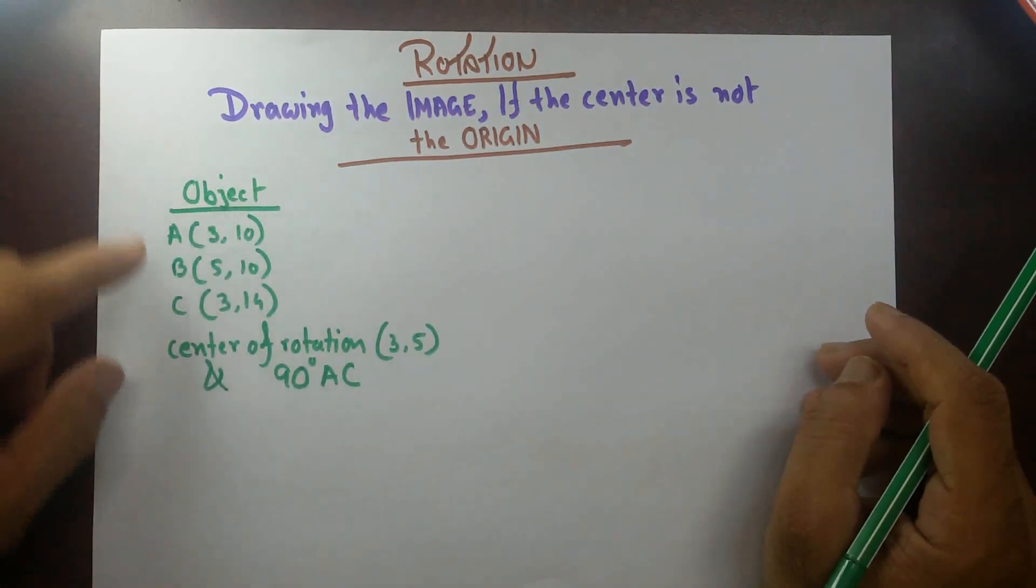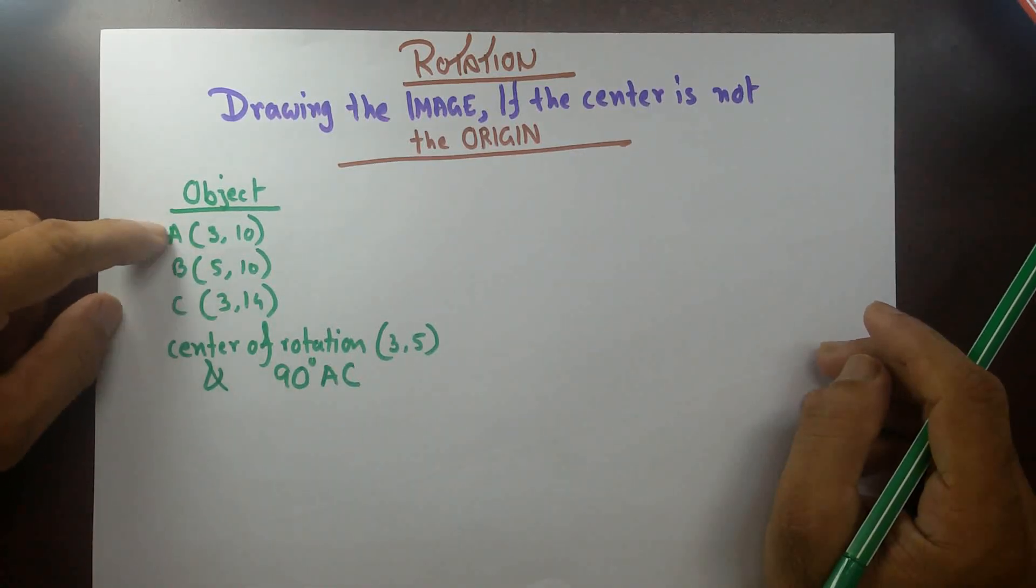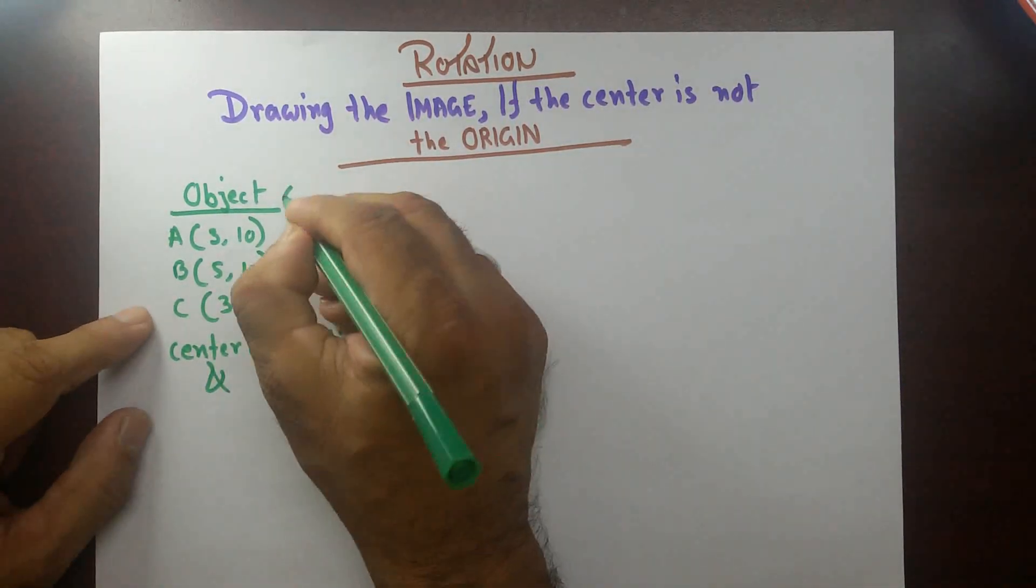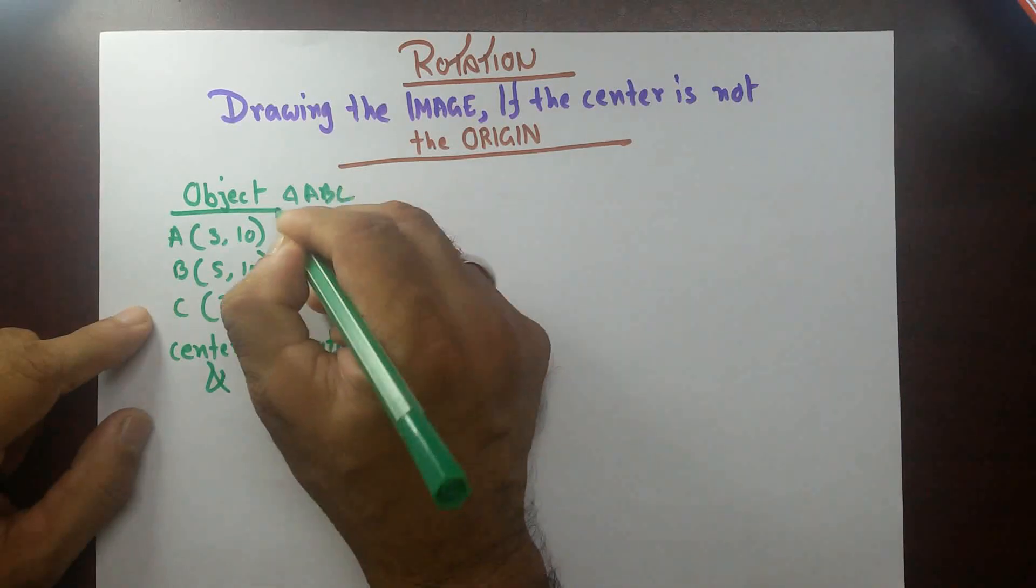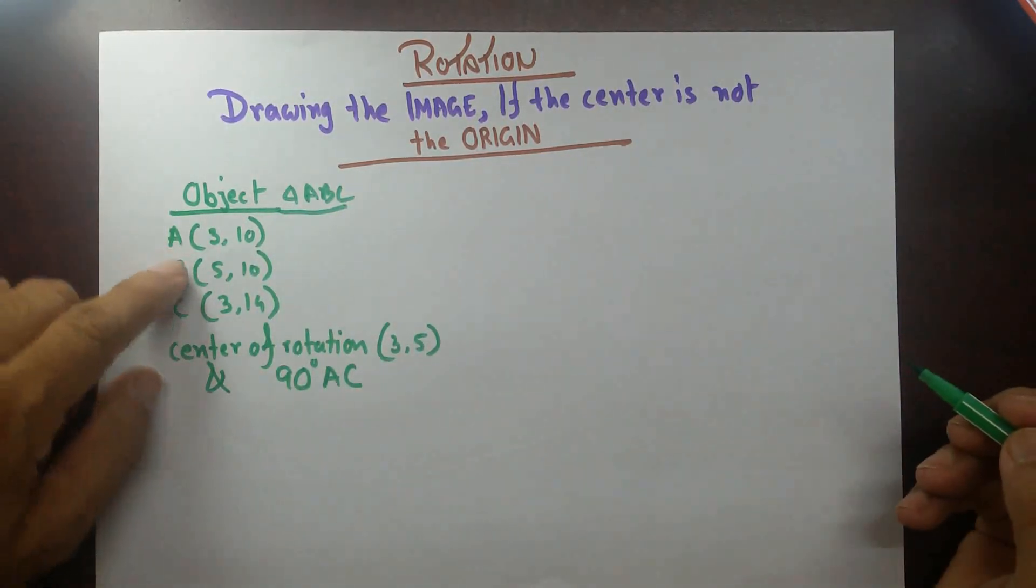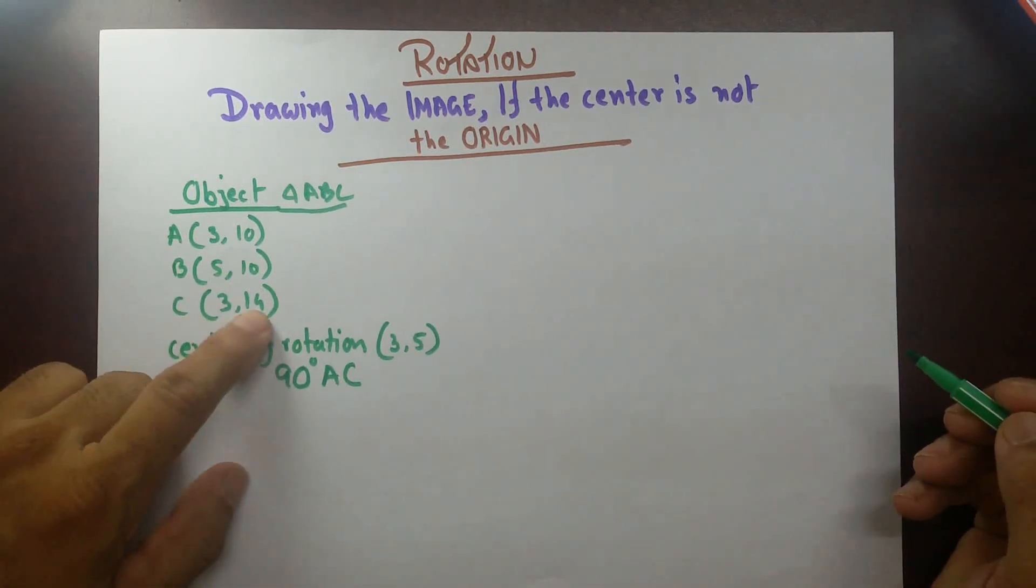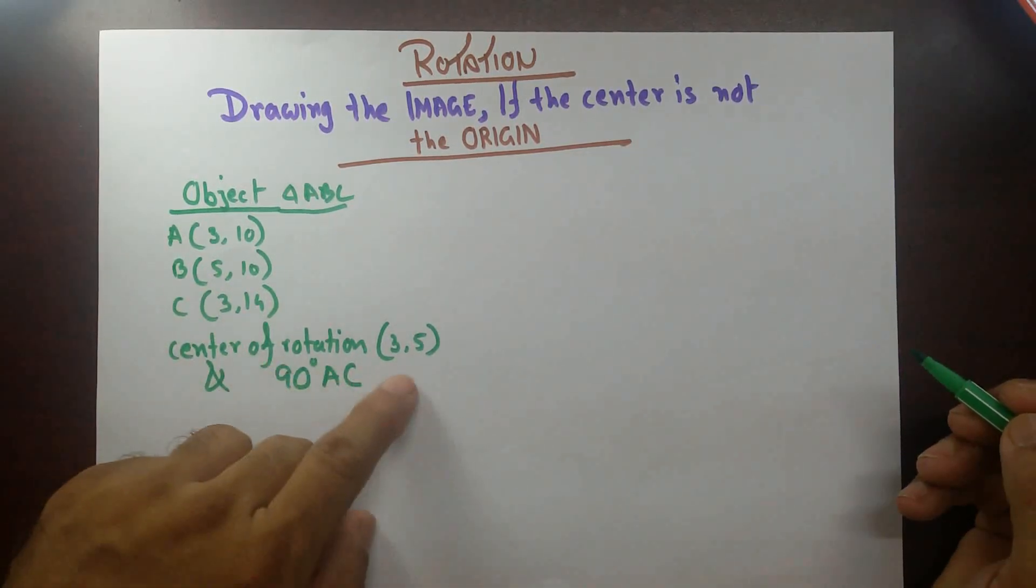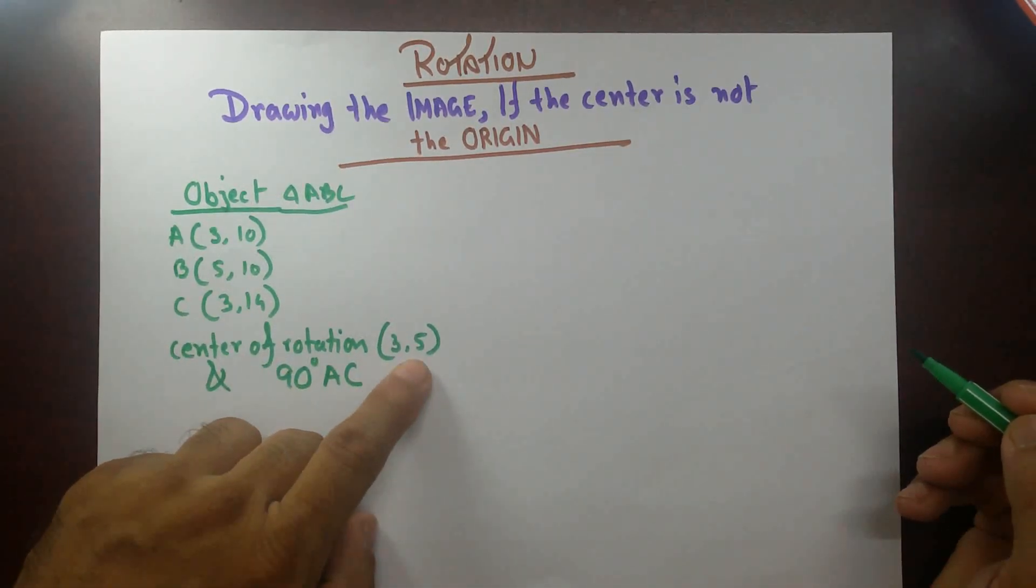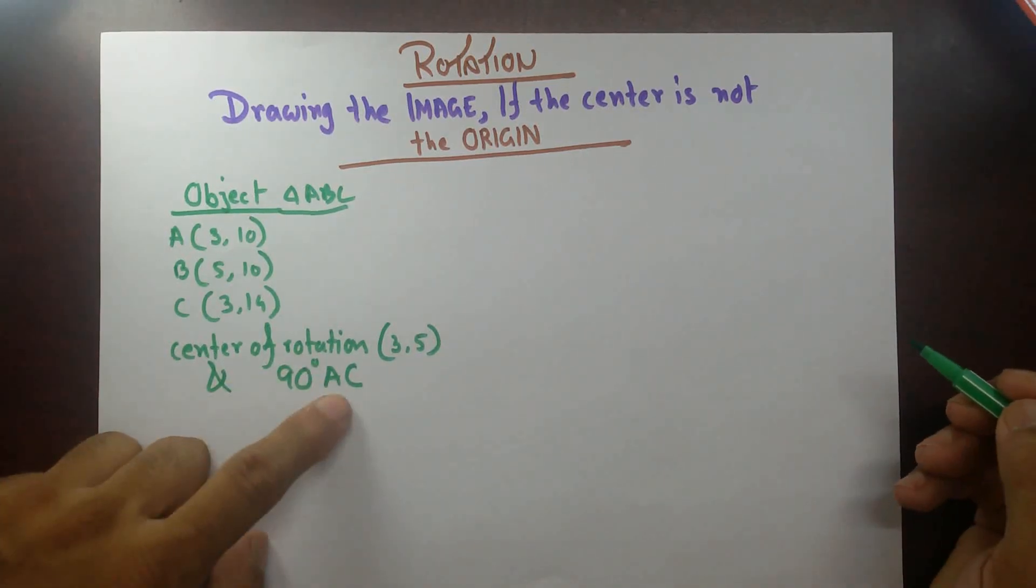We have the object, coordinates of object triangle ABC. It's a triangle ABC, object coordinates are 3,10, 5,10 and 3,14. Center of rotation here, not the origin 0,0, it's 3,5 and direction is 90 degree anticlockwise.